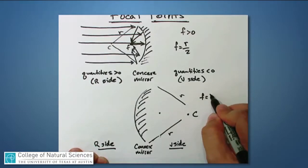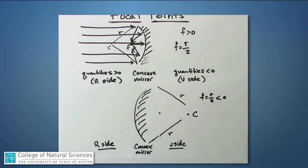So if F is always equal to R over 2, this will be a negative number because the center of curvature is on the V side. That means the radius of curvature will be a negative number, and as a result, the focal length will be a negative number.